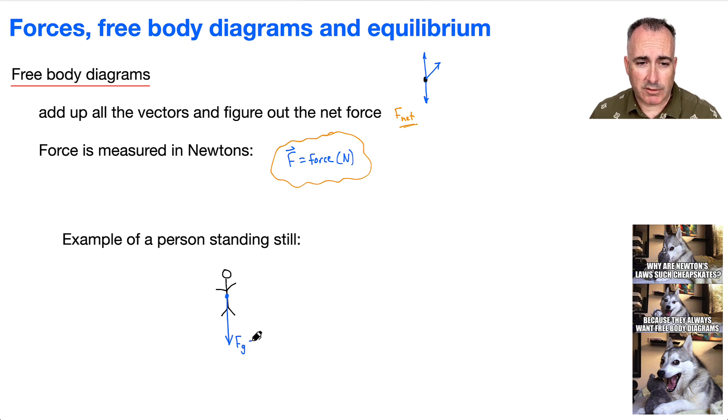That's the force of gravity. We can often write it as m times g. That's because F equals ma, and a is the acceleration due to gravity.